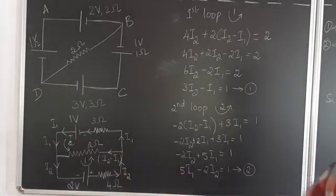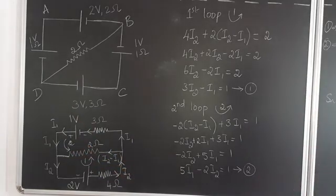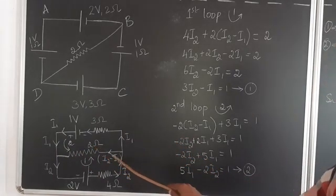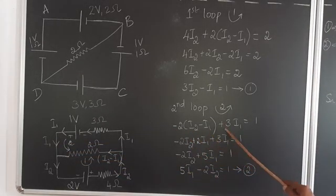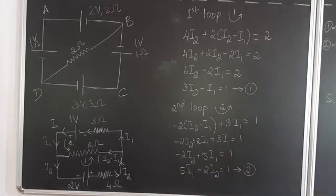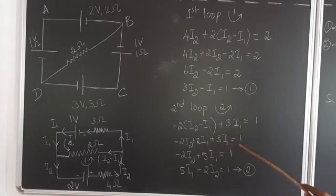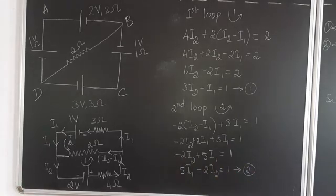For loop 2, the EMF is 1 volt. The current through the 2 ohm resistor is i2 minus i1, which is opposite to the assumed anti-clockwise direction, so it is minus 2(i2 − i1). The 3 ohm resistor carries i1 in the same direction as assumed, so plus 3i1 = 1. Expanding: −2i2 + 2i1 + 3i1 = 1, giving 5i1 − 2i2 = 1. This is equation 2.